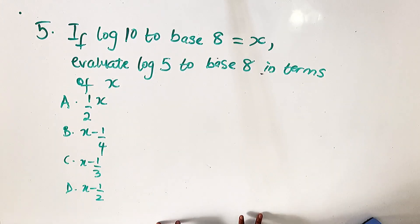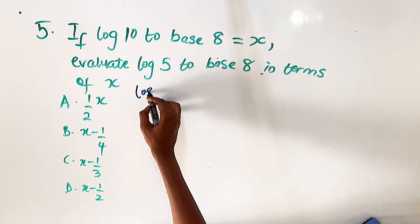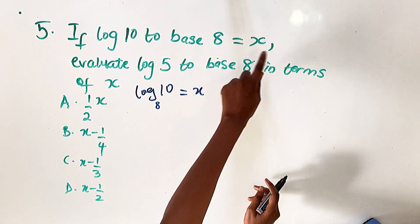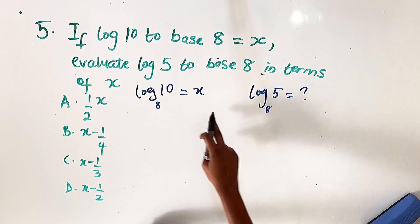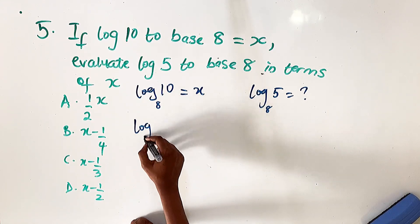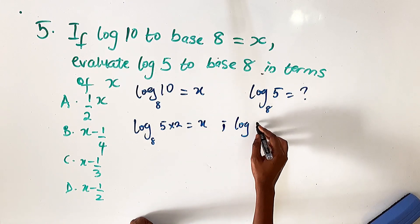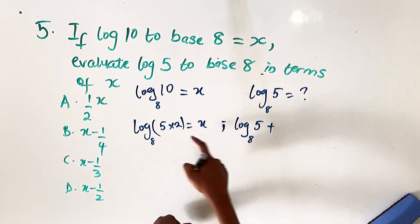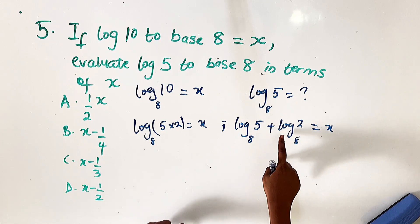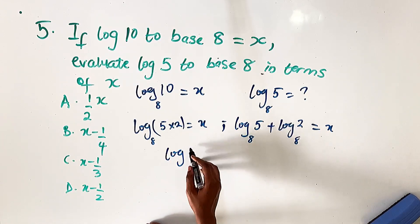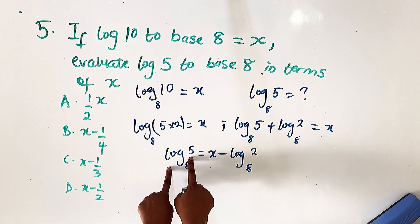Question number five, our last question: if log 10 base 8 equals x, evaluate log 5 base 8 in terms of x. Log 10 base 8 can be written as log(5 × 2) base 8 = x. Expanding: log 5 base 8 + log 2 base 8 = x. Making log 5 base 8 the subject: log 5 base 8 = x − log 2 base 8.